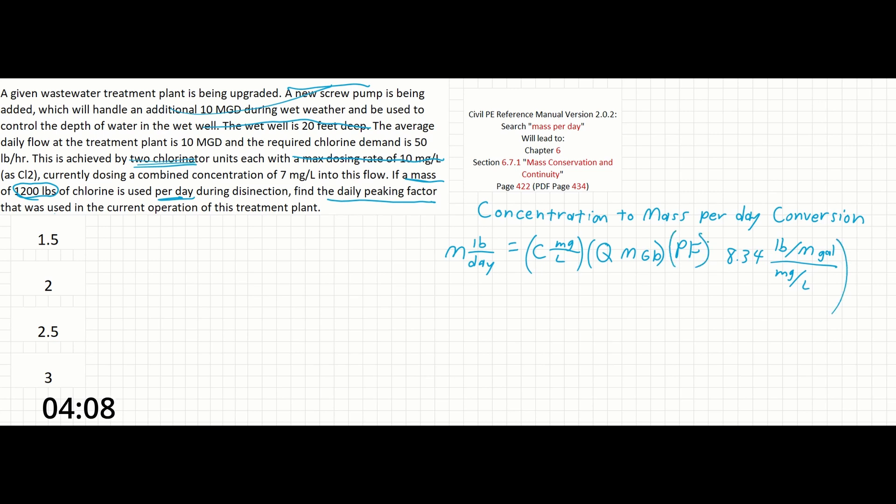Now that this equation is set up, we can solve it directly. Our pounds per day of chlorine mass is already given as 1200.